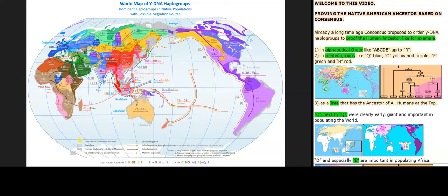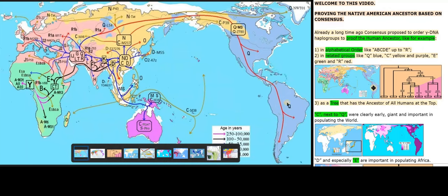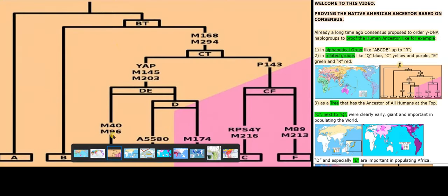Welcome to this video: Proving the Native American Ancestor Based on Consensus. A long time ago, Consensus proposed to order Y-DNA haplogroups to prove the human ancestor — for example: 1. in alphabetical order like A, B, C, D, E up to R; 2. in related groups like Q-Blue, C-Yellow and Purple, E-Green and R-Red; 3. as a tree that has the ancestor of all humans at the top.